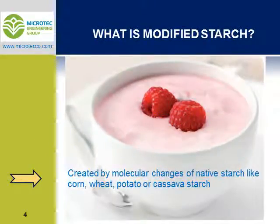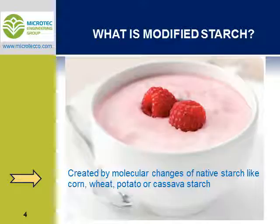The first question in your mind might be: what is modified starch? Native starch from corn, wheat, potato, and cassava has many properties and functions which make it necessary to be used in many industries. To improve its physico-chemical properties or to create new functionality for different applications, starch can be modified by changing its molecular structure. The new starch created from molecular changes of native starch is called modified starch.